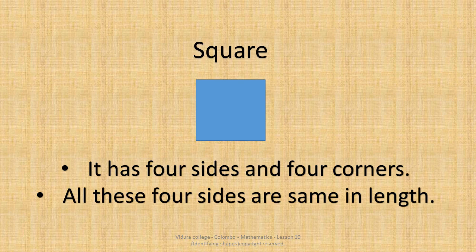What is this shape? Very good. It's a square. It has four sides and four corners. All these four sides are same in length.